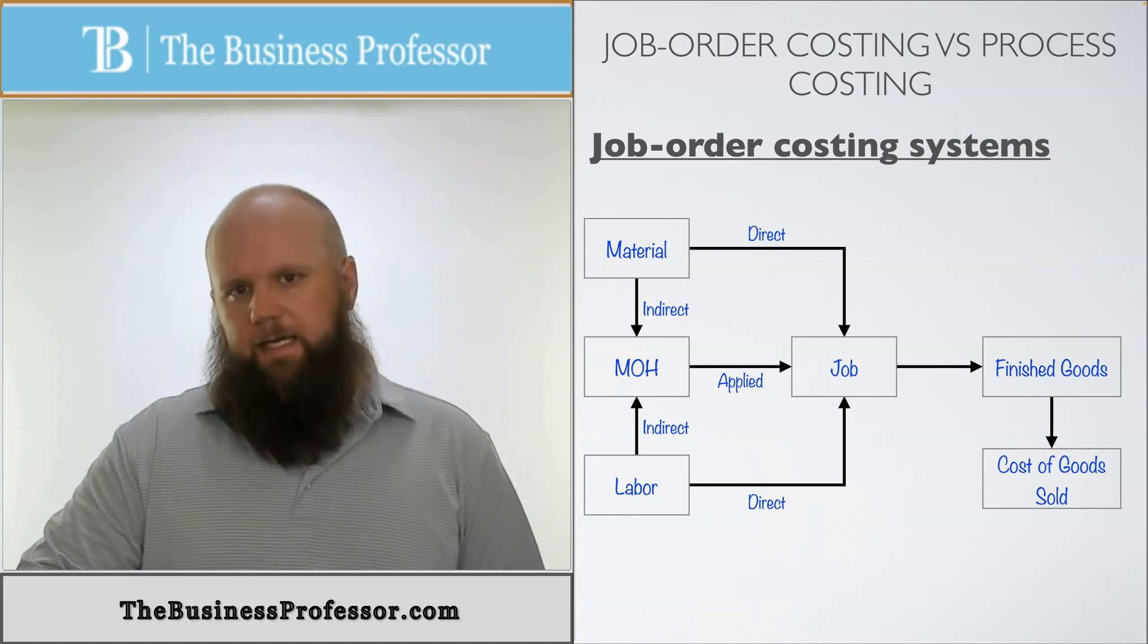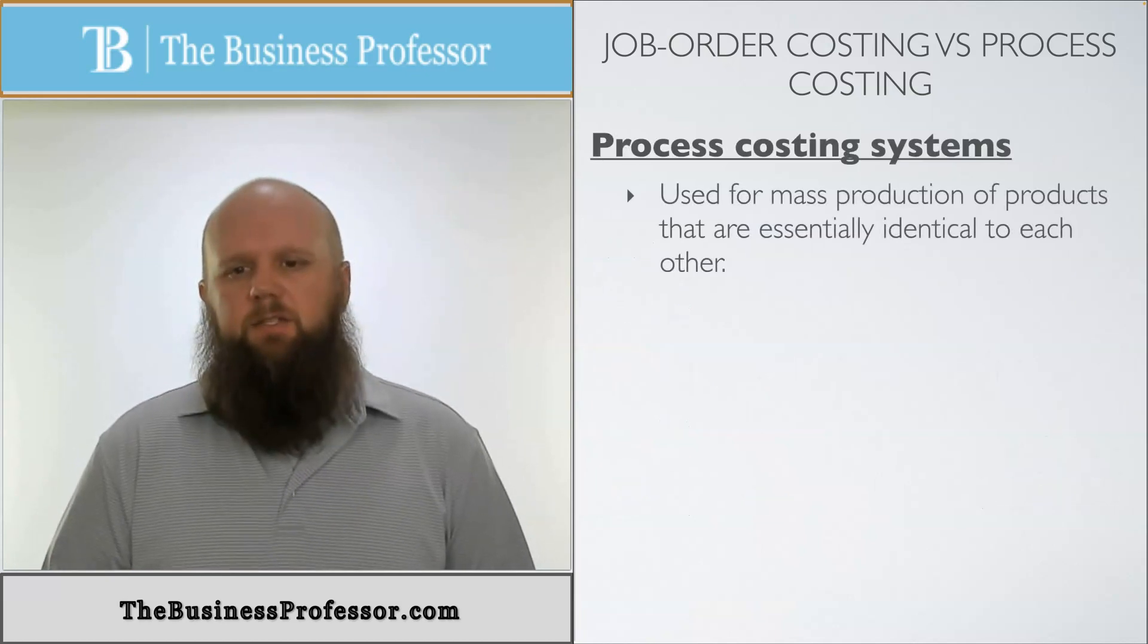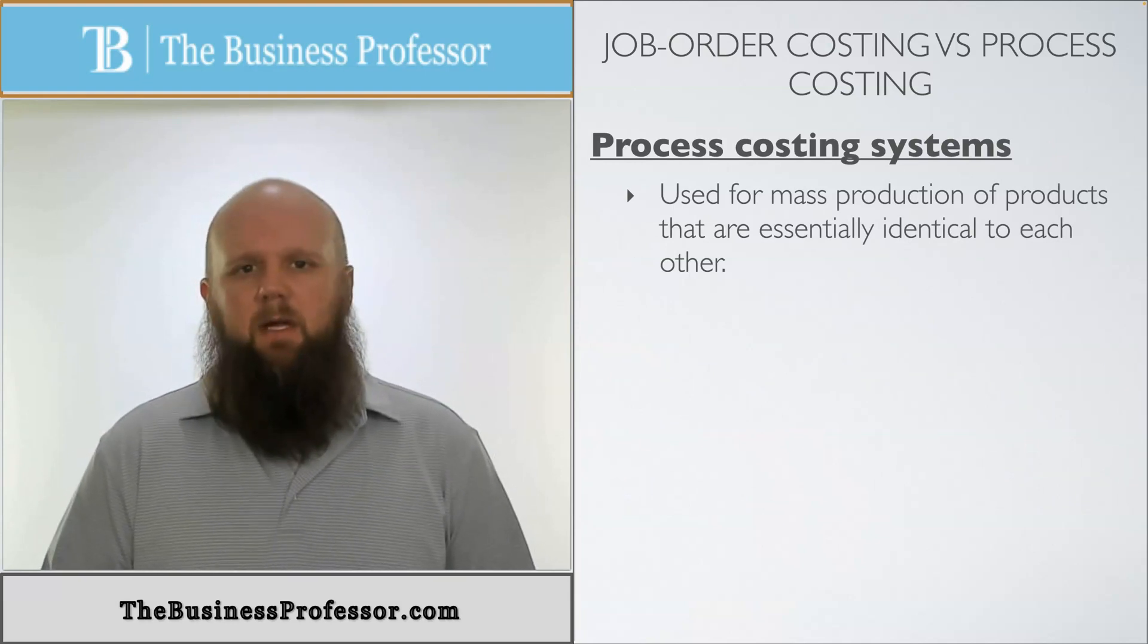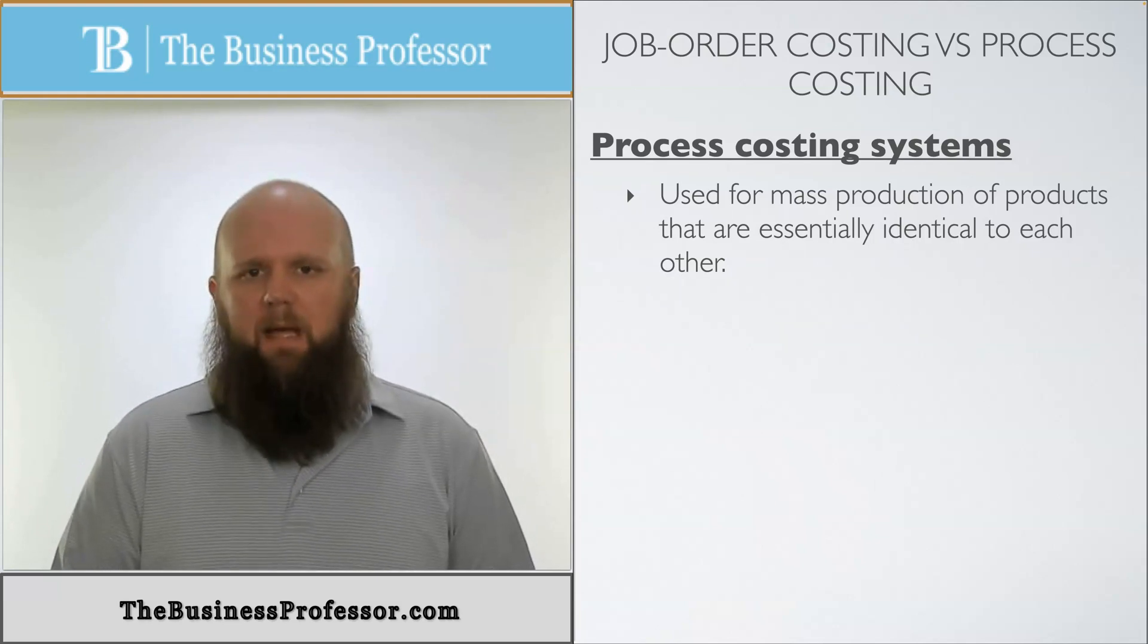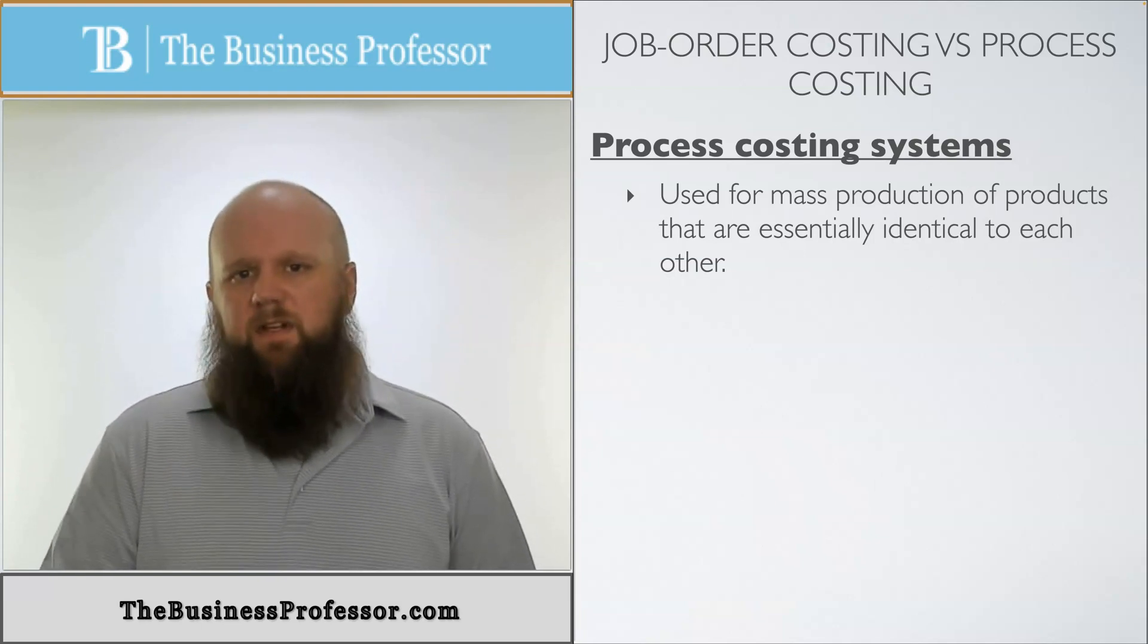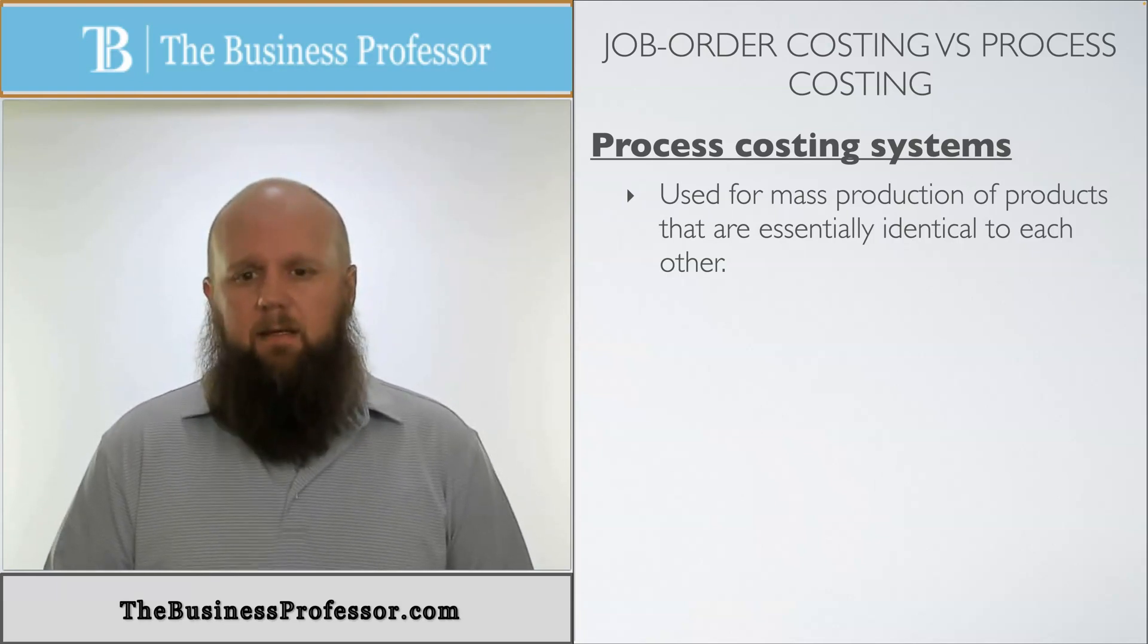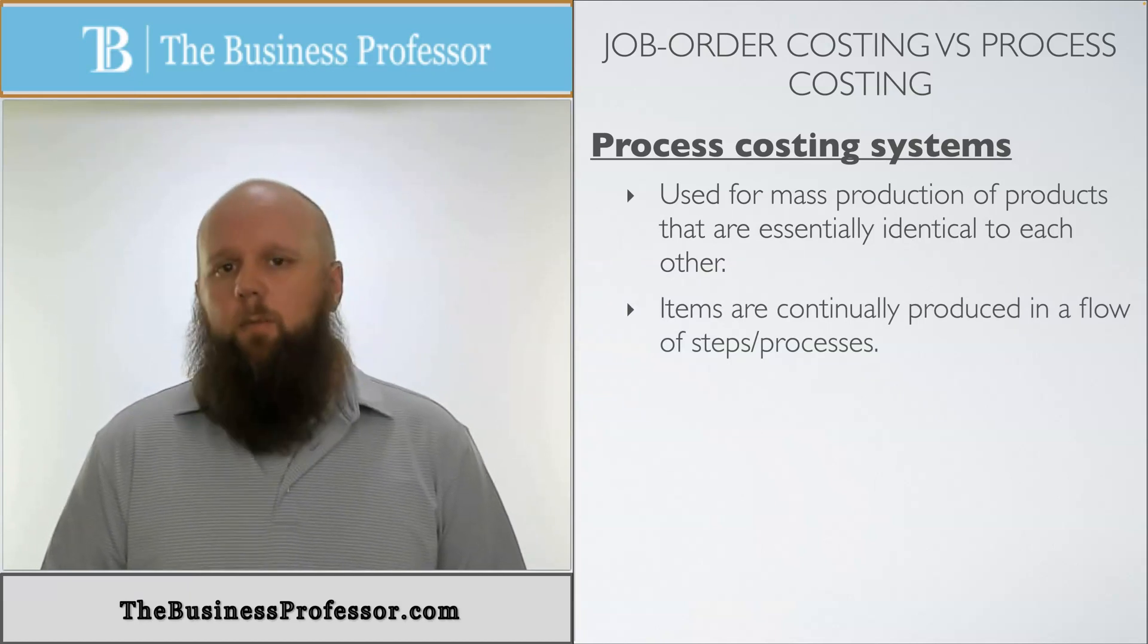Now let's look at the other side. Let's look at process costing. Process costing is used for mass production of products that are essentially identical to each other. This should be the equivalent of pencils. When they make pencils, they create it in mass production and all the pencils are the same. You can't call the company and ask them to customize your pencil in a specific way because it's done in mass production. There's no definitive start and end time. These are run a lot of times 24 hours a day. These items are continually produced in a flow of steps or processes.